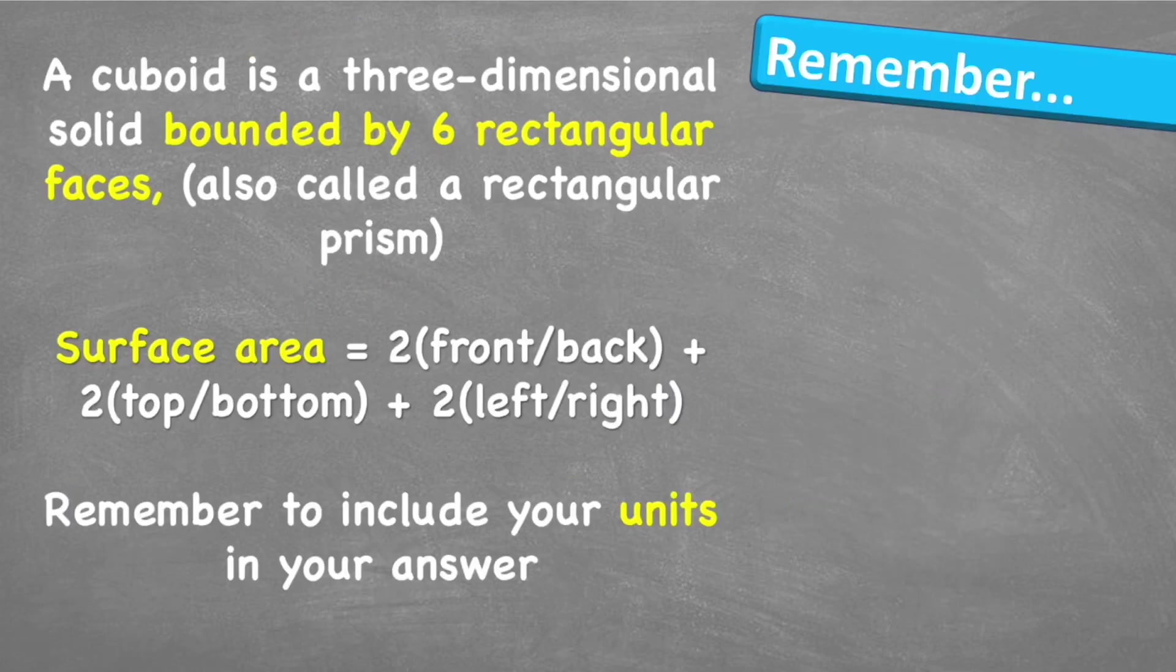Let's look at what to remember. A cuboid is a three-dimensional solid bound by 6 rectangular faces, sometimes also called a rectangular prism. The surface area is equal to 2 of the front or backs, 2 of the top or bottoms, and added to 2 of the left or right. Remember to include your units in your answers.